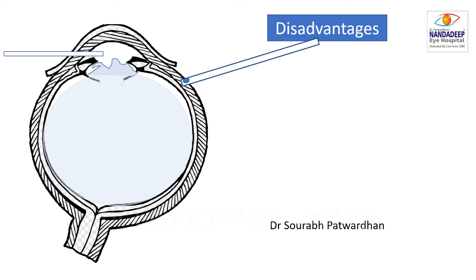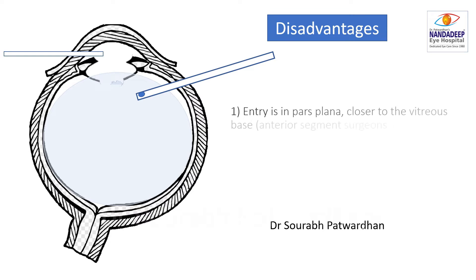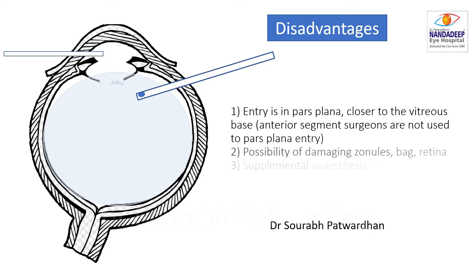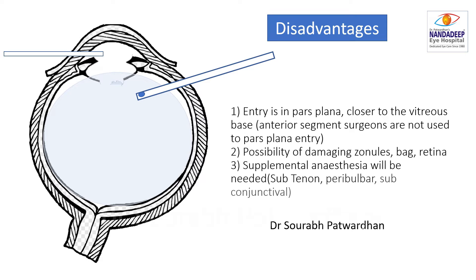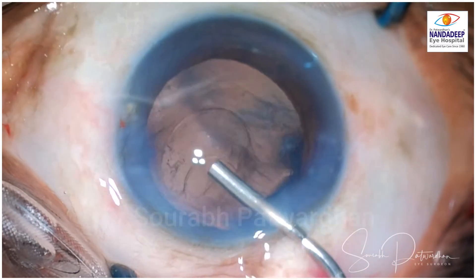There are some disadvantages. The first is that anterior segment surgeons are not used to the parsplana approach compared to retinal surgeons who are used to putting trocar cannulas through the parsplana. Anterior segment surgeons may need to get used to this approach. Also, because it passes through the parsplana route, there is a possibility of damaging zonules, the bag, and the retina if you go too posteriorly. You also need to supplement anesthesia — subtenon, peribulbar, or subconjunctival — so that the patient is comfortable while performing parsplana anterior vitrectomy.